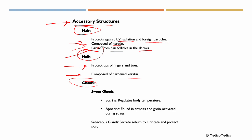Then we have the glands, sweat glands. These can be divided to apocrine and eccrine. Now these regulate body temperature. And the apocrine ones are found in armpits and groin, activated during stress. Then we have the sebaceous glands. These secrete sebum to lubricate and protect our skin.